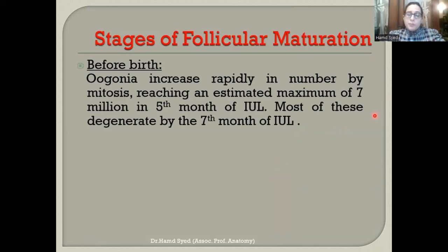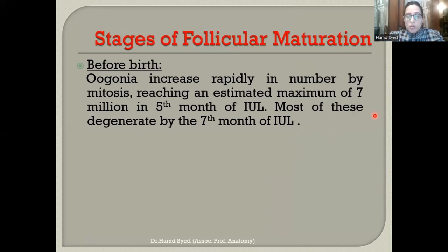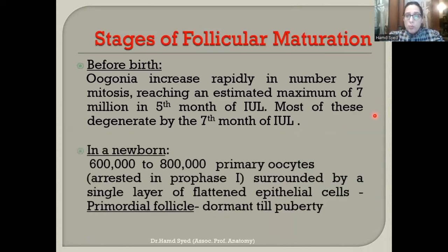Before birth, oogonia increase rapidly by mitosis, reaching an estimated maximum of seven million in the fifth month of intrauterine life. Most degenerate by the seventh month. In a newborn girl, approximately 600,000 to 800,000 primary oocytes remain. These are arrested in prophase of meiosis I and surrounded by a single layer of flattened epithelial cells as primordial follicles — a state maintained until puberty.